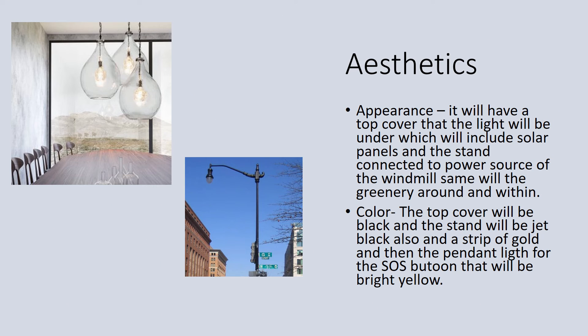Now I'm going to tell you the appearance and color of our pendant lights. Appearance: it will have a top cover that the light will be under, which will include solar panels, and the stand connected to the power source of the windmill. Color: the top cover will be black and the stand will be jet black also with a strip of gold, and the pendant light for the SOS button will be bright yellow.